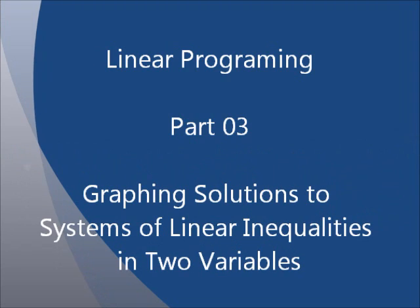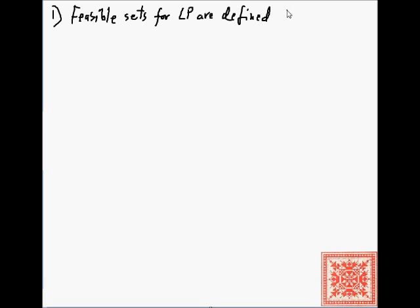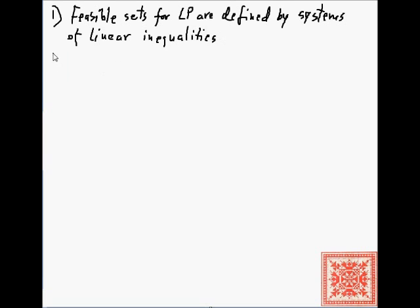In this screencast we'll continue our discussion of linear programming and talk about how to graph solutions to systems of linear inequalities in two variables. In linear programming, feasible sets are defined by systems of linear inequalities — this is what we covered in the previous screencast. There are two approaches to finding those feasible sets: geometric and algebraic.